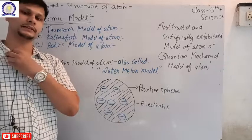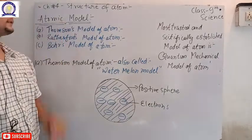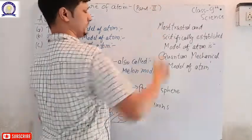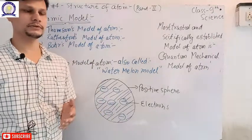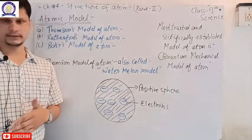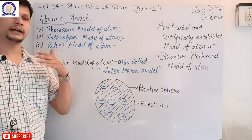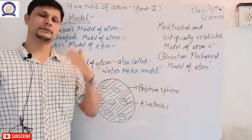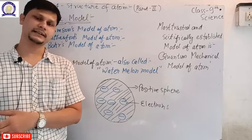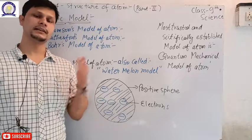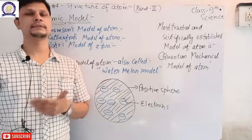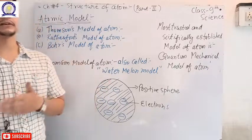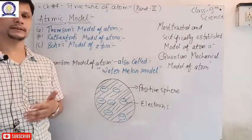Welcome to Mastermind Optic School Online Classes. Today's video is about Chapter 4, Class 9 Science, Part 2. In the previous video, we discussed the structure of atoms. According to Dalton's theory, the atom was indivisible, but in the 19th century scientists discovered that the atom is formed of sub-atomic particles — electrons, neutrons, and protons. Today we are going to look at atomic structure.